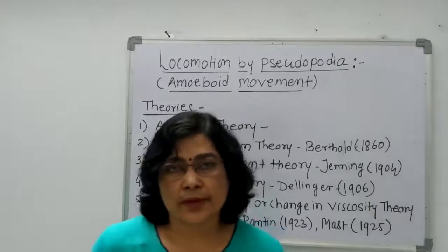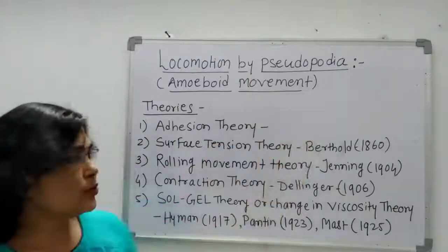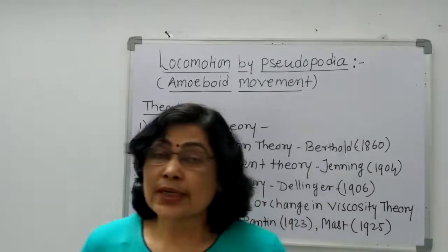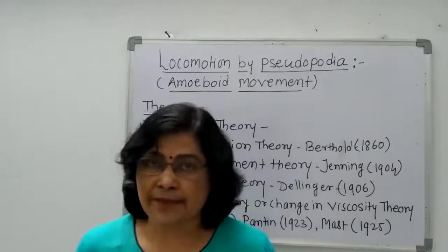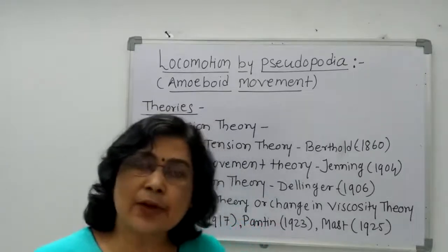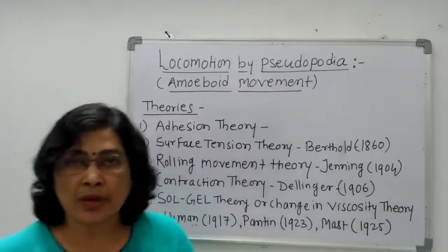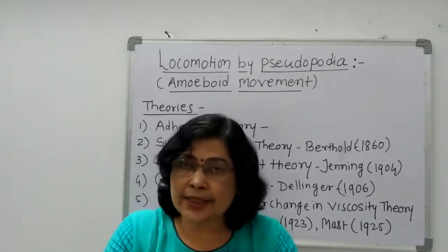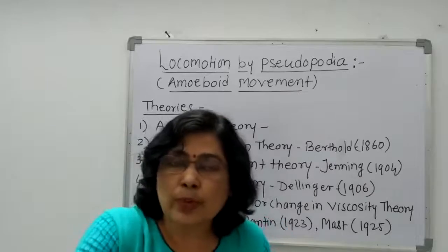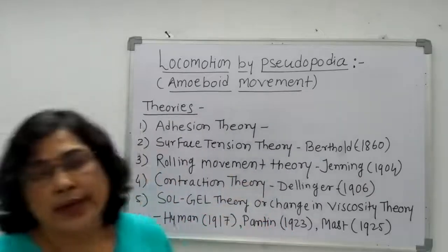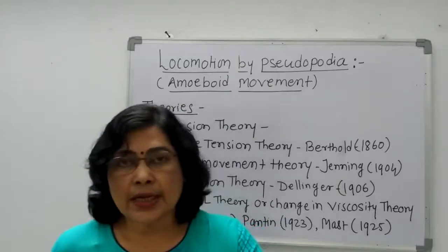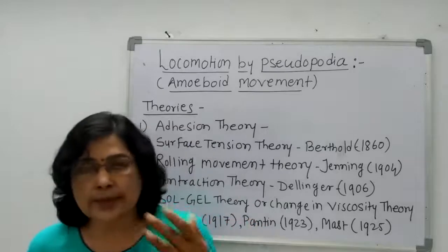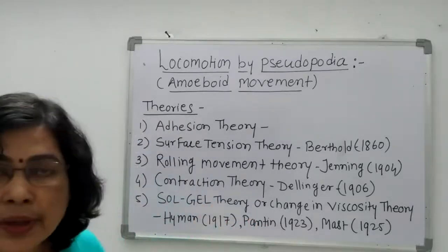The first theory of amoeboid movement — locomotion by pseudopodia — is the Adagent Theory. According to this theory, protoplasm flows just like a drop of water on an uneven surface; amoeba is on an uneven surface and its protoplasm flows along an adagent path. The most important drawback of this theory is that even when amoeba is not in surface contact, there is still development of pseudopodia. So this theory is discarded.